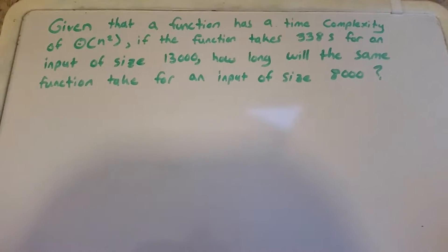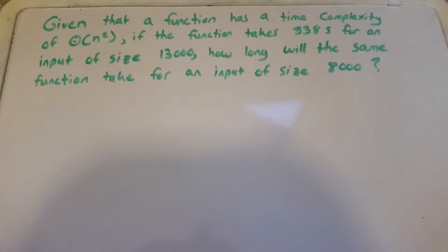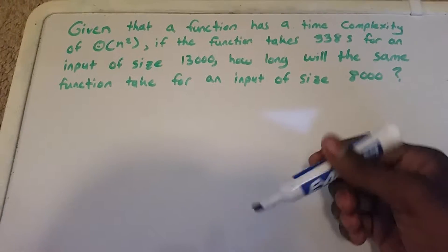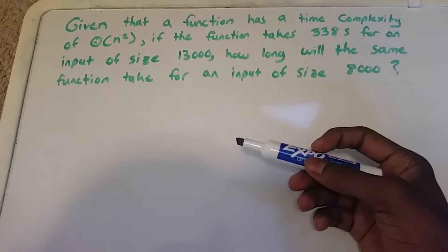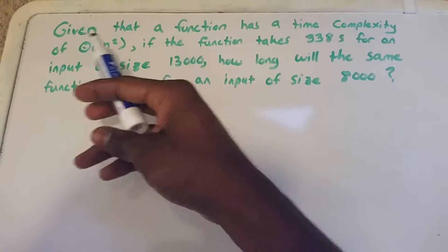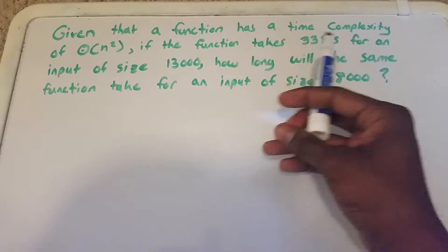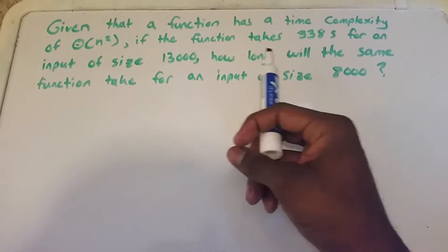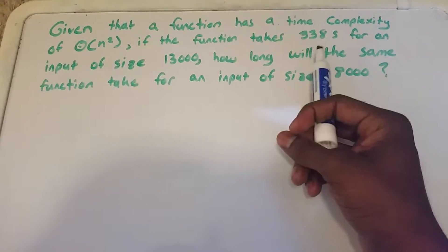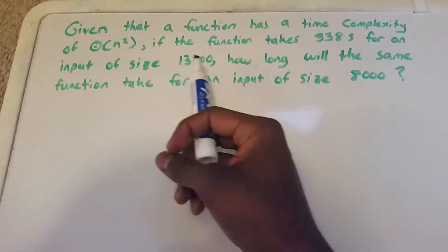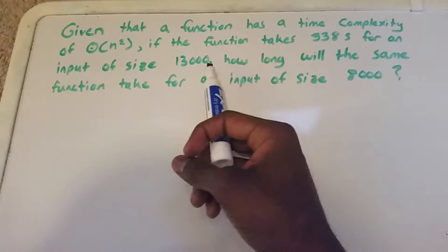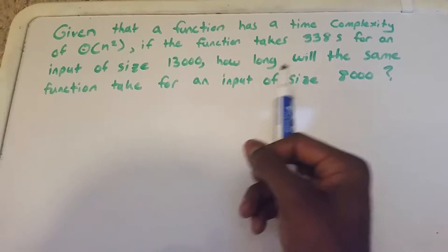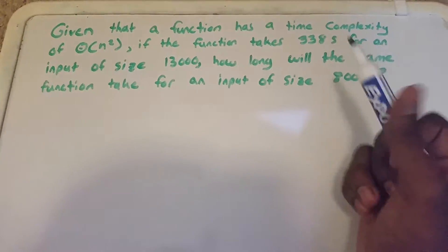Hey guys, so this is an interesting algorithm analysis problem I came across. It says: given that a function has a time complexity of theta n squared, if the function takes 338 seconds for an input of size 13,000, how long will the same function take for an input of size 8,000?